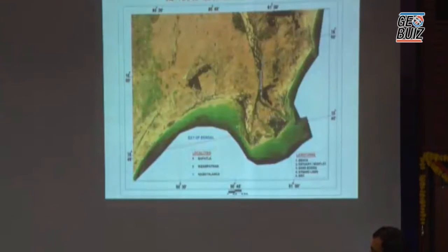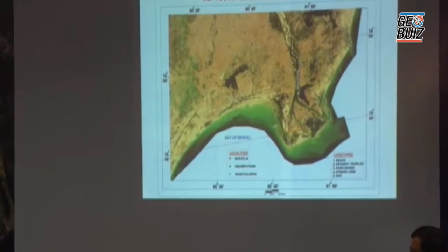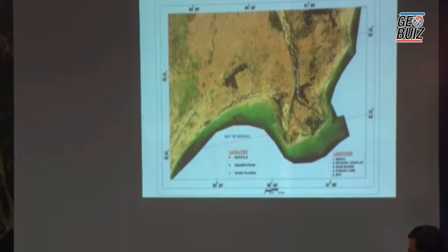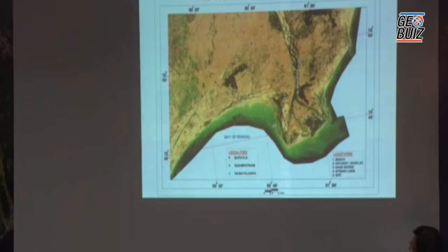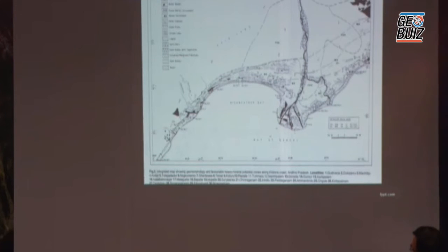We also have another mandate: we have large reserves of thorium along beach sands all around the country. The beach sands are monitored and explored by AMD for thorium and other rare earths, which come as byproducts. A lot of satellite data is being used for geomorphological mapping and for picking up zones rich in thorium. This is exemplified in the Krishna delta, where extensive geomorphological mapping has identified areas rich in thorium and other minerals.